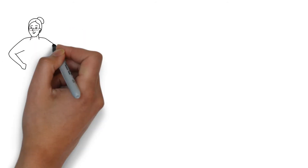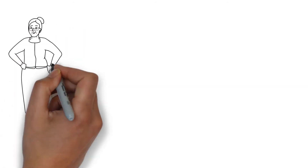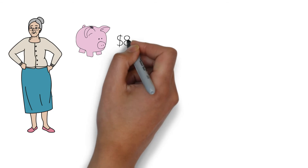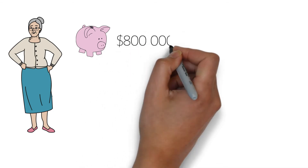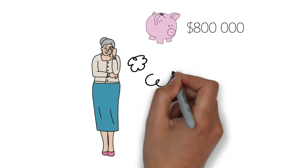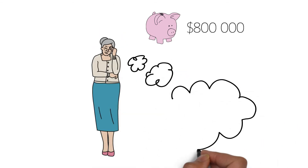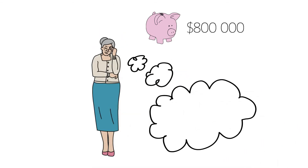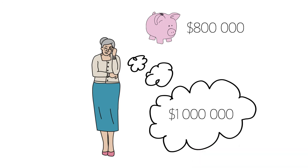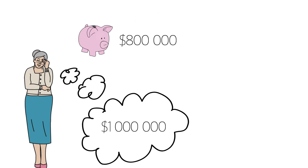In Retirement Planning 101, we looked at Sarah's situation and we saw that her resulting nest egg would not be enough to sustain her lifestyle post-retirement. So how much would Sarah have to save for her retirement? From our Smart Risk Analytics, the number is approximately $1 million, which is $200,000 more than what she had planned to save.